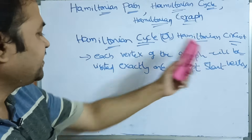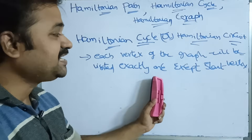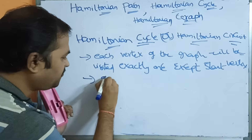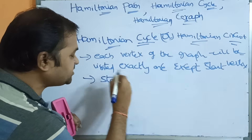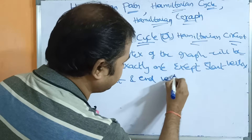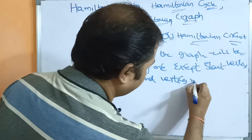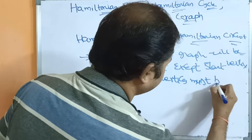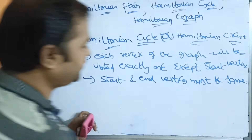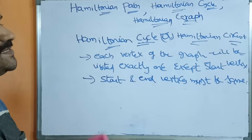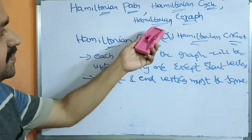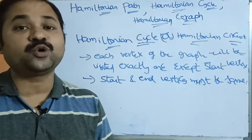Each vertex of the graph will be visited exactly once, except the start vertex — meaning start and end vertices must be the same. We can repeat the start vertex, but no other vertex can be repeated.